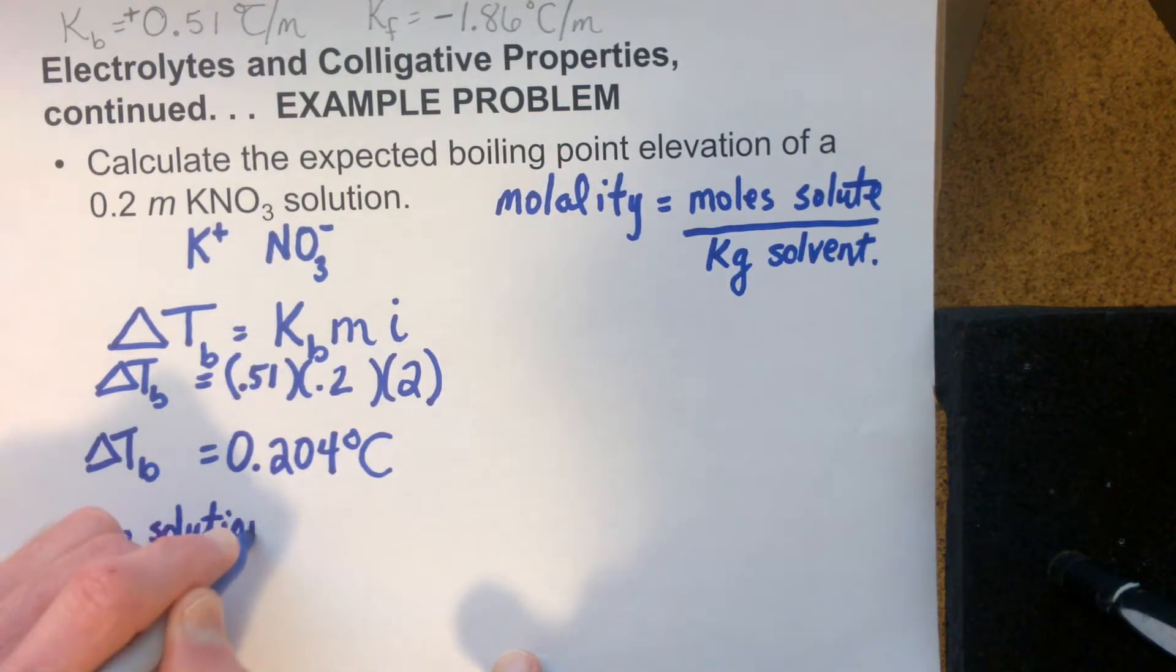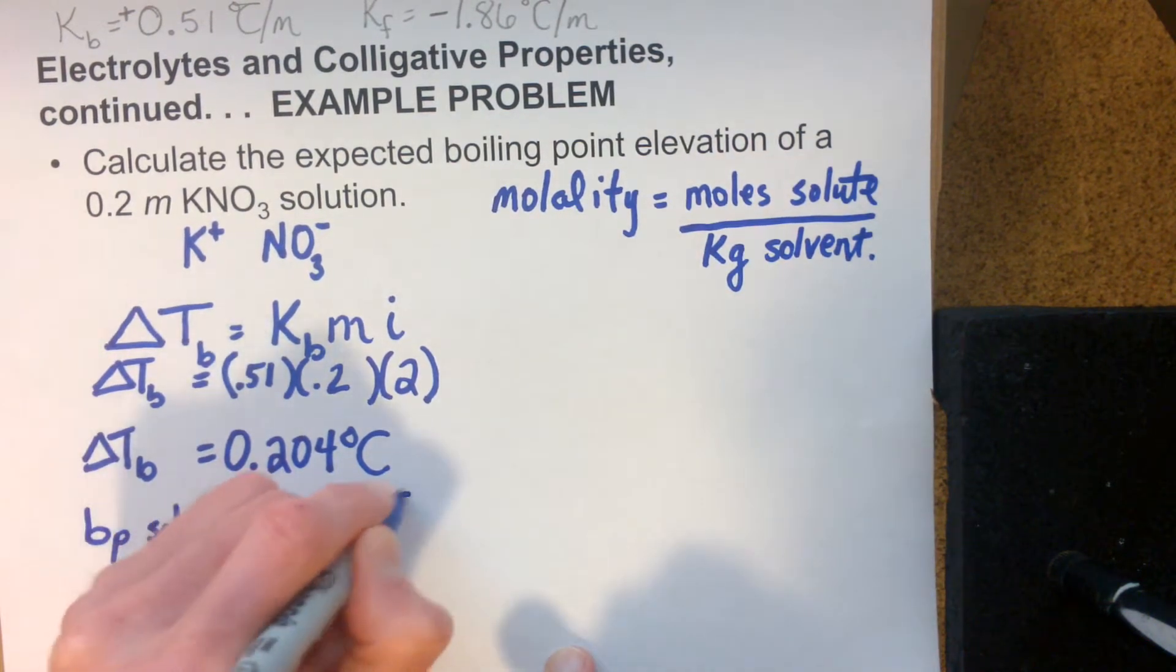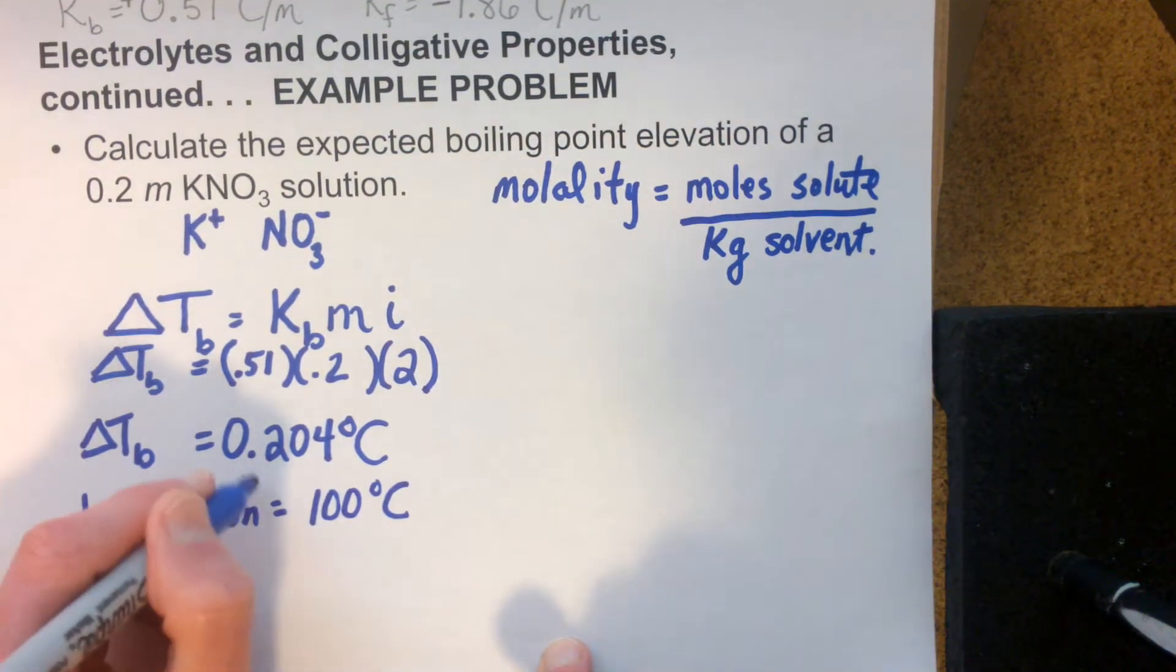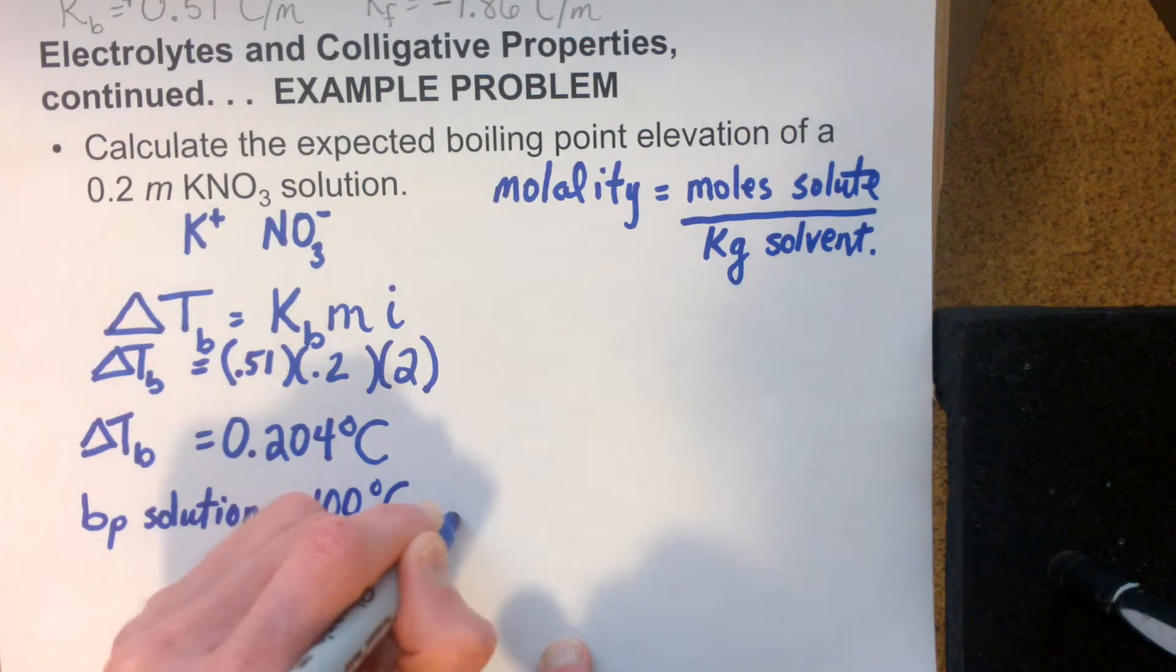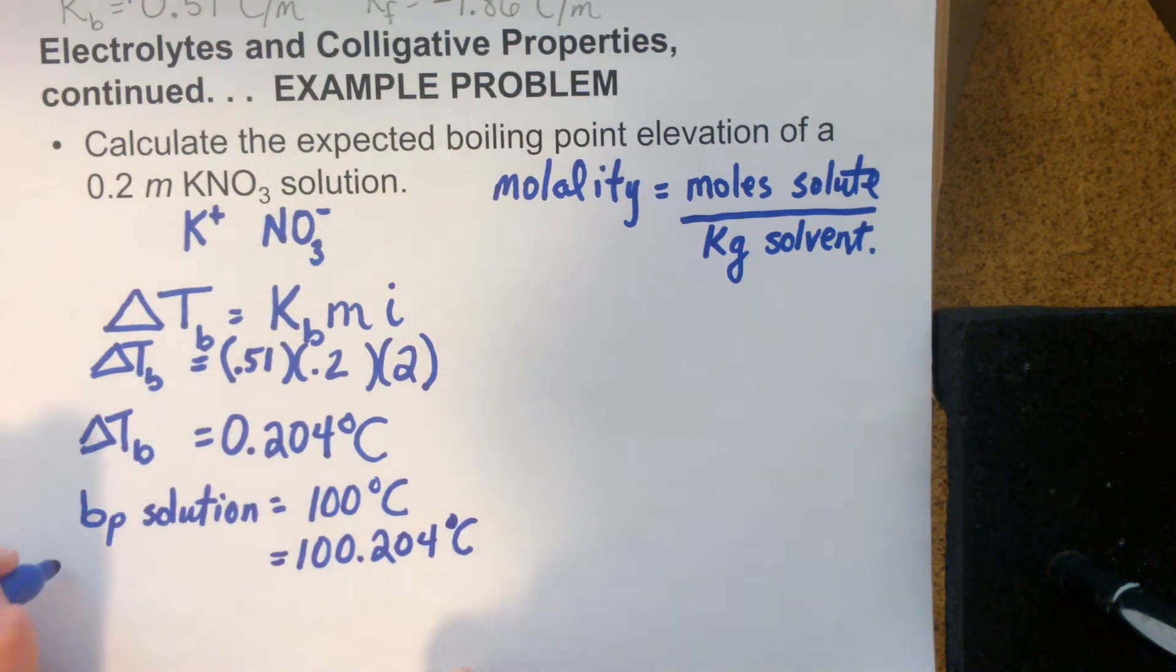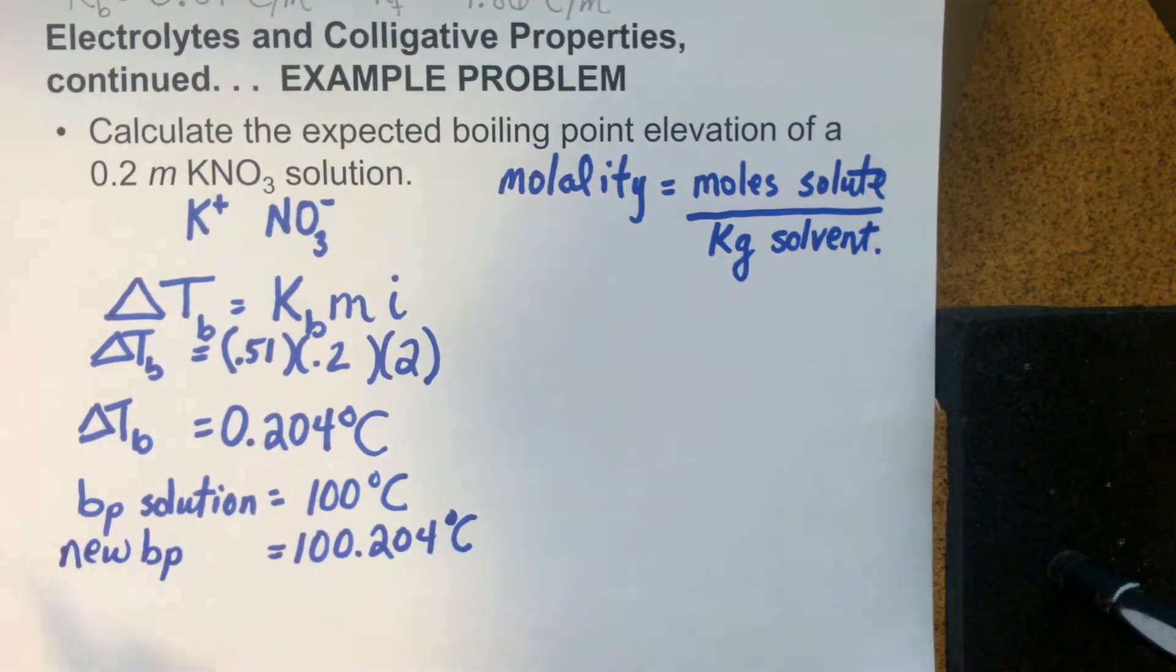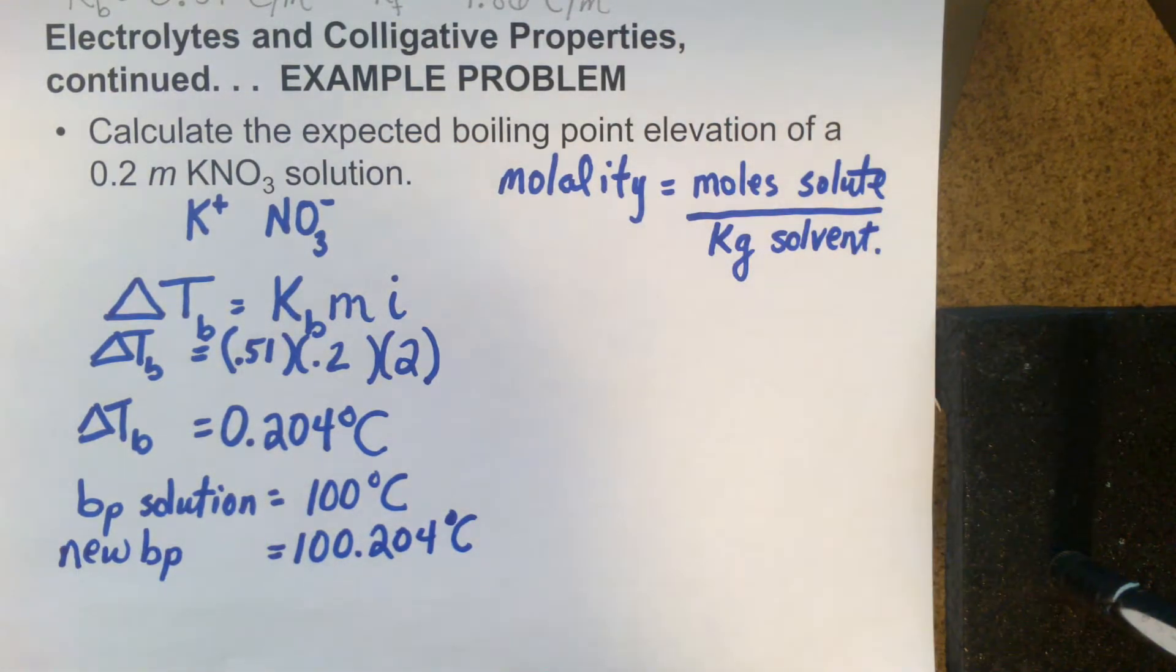What is the new boiling point for our solution here? Water boils, pure water boils at 100 degrees Celsius. That's its pure boiling point. Now it is going to boil 0.204 degrees above that. Not much change, but that's mainly because we have a very low molality value. So our new boiling point of our solution is 100.204 degrees Celsius. But our boiling point elevation was just 0.204 degrees Celsius.